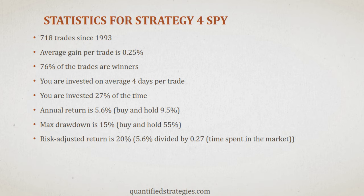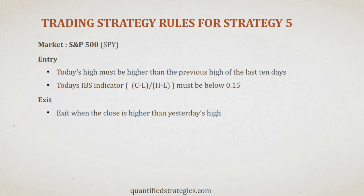Let's go to our last back-tested and proven swing trading strategy. This one is somewhat different — it's a strategy we made six years ago, and it has lately worked better than ever. The trading rules are very simple: today's high must be higher than the high of the last 10 days, and the IBS indicator must be below 0.15. If both are true, we buy the close. We use the same sell signal as all four other strategies — when the close is higher than yesterday's high.